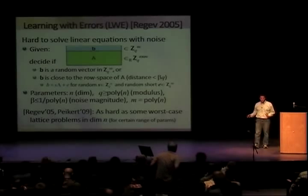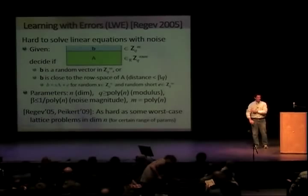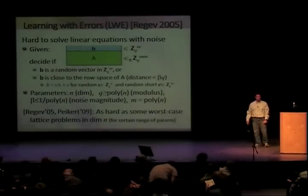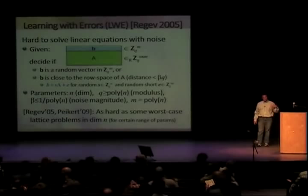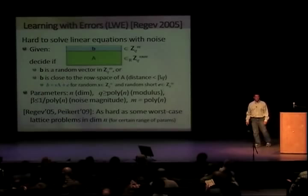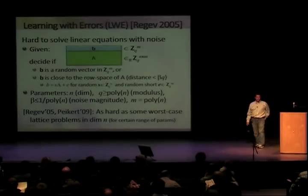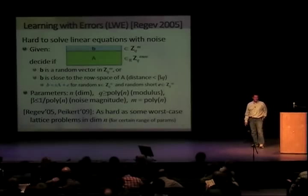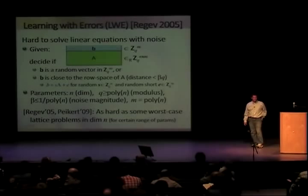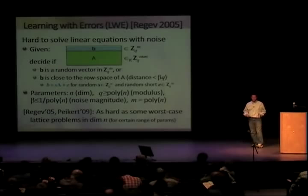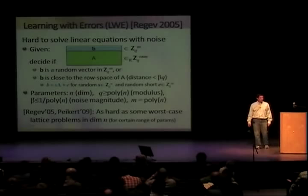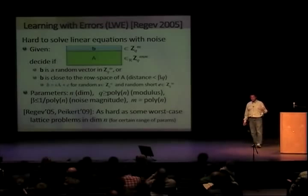Then there is the noise magnitude parameter, which is at most a polynomial fraction — maybe we need to work with even smaller noise. M is the number of columns. So we have a random matrix in Z_Q to the N by M, and another vector in Z_Q to the M. Our goal is to decide whether B is a random vector, or whether B was obtained as S times A plus E, where S is random and E is short, chosen from some distribution such that with high probability E is short. These are two well-defined distributions, and the premise is that this distinction is hard.